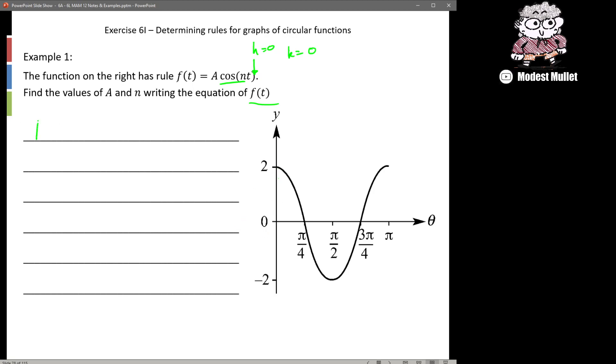From this we can see the amplitude is 2 which is our a. And then we can also see that the period in this case, the time to go from the max back to the max is π.